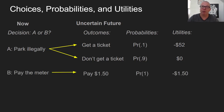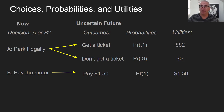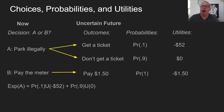Whereas if you make decision B — pay the meter — then the outcome is that you pay $1.50, and we'll attach a probability of 1, a certainty, to that. So the utility in this case is minus $1.50. Now you're faced with two choices, A or B, with those various probabilities attached to their outcomes.